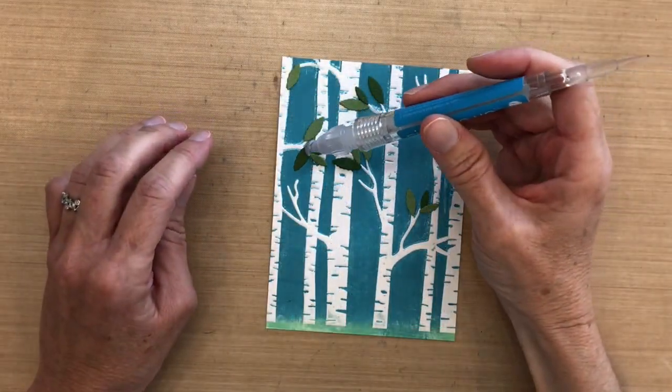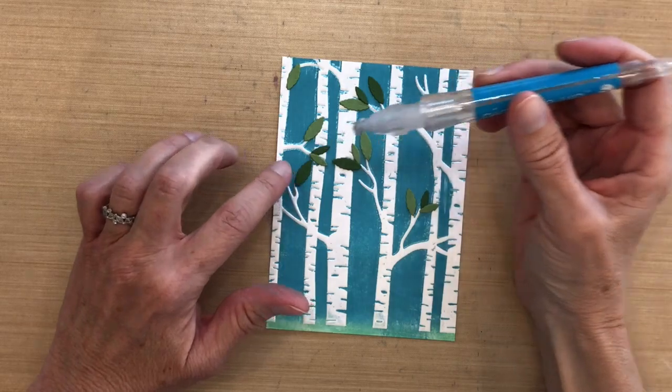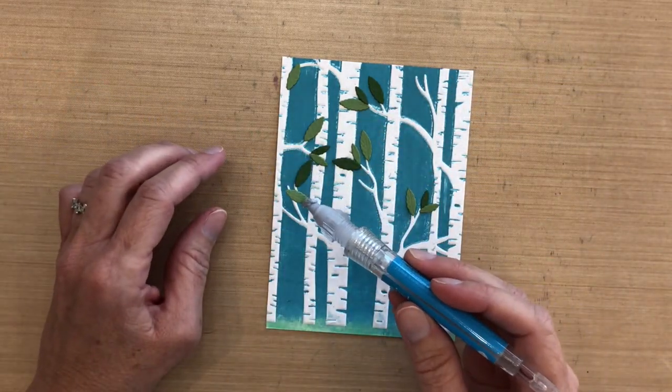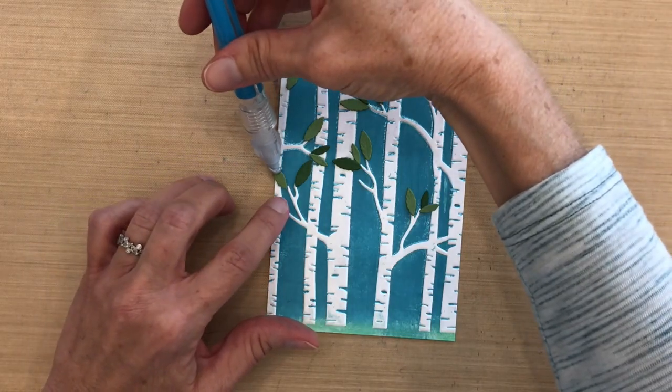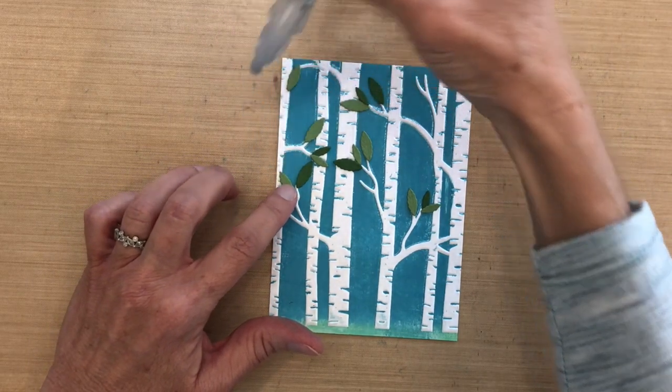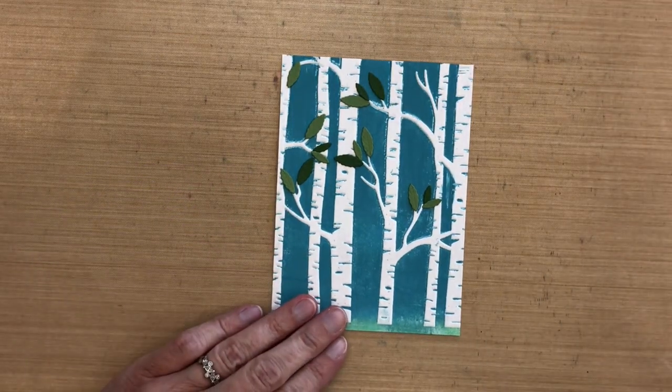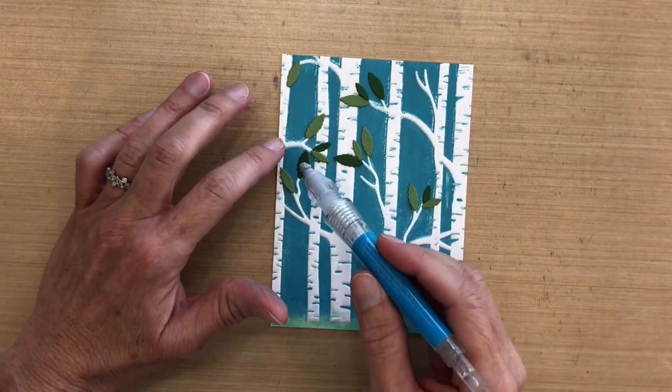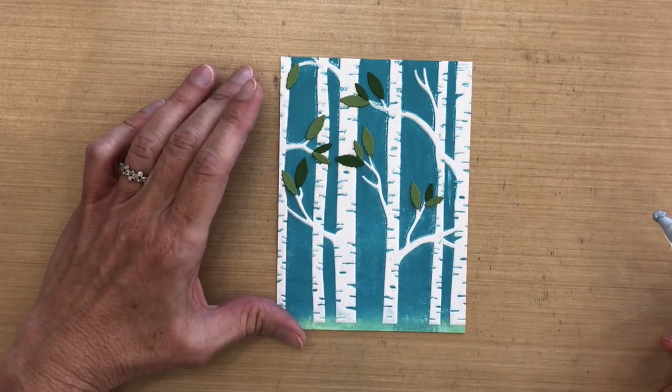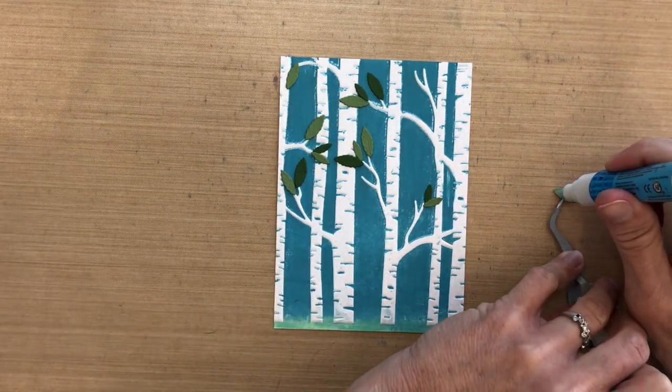I die cut several of those leaves from that Simon Says Stamp die set with Wild Wasabi and Garden Green. Now I'm just adding them to the branches. I'm laying them down with my pick-me-up sticks so I can figure out how I want to distribute them. I'm adding them basically to all of the open branches, so I'm creating this spring look out of what is typically used as a winter scene.